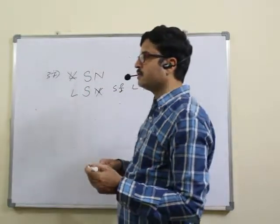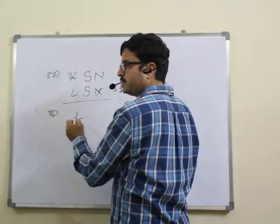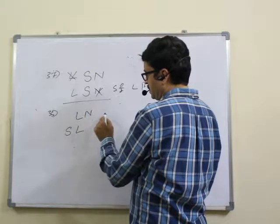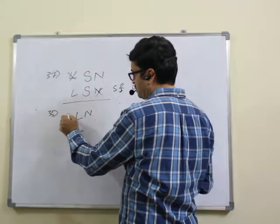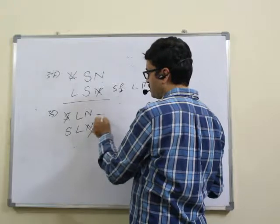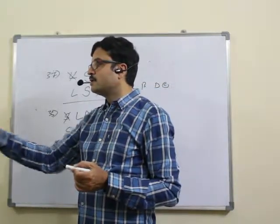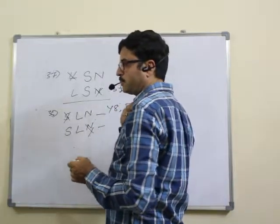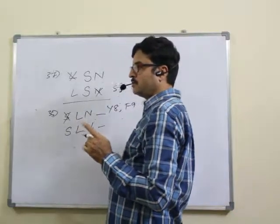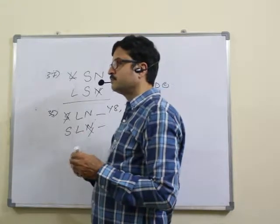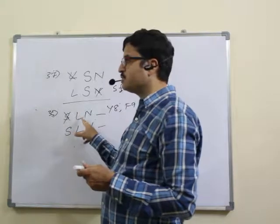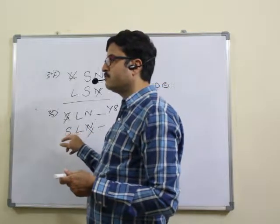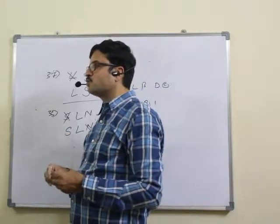Question 39: how many such letters are there which are either immediately followed by a number or preceded by a symbol, but not both? For letter-number: Y8, F9, Q1. For symbol-letter combinations, only three qualify in total. Answer: 39, fifth option.